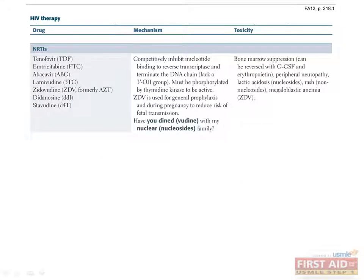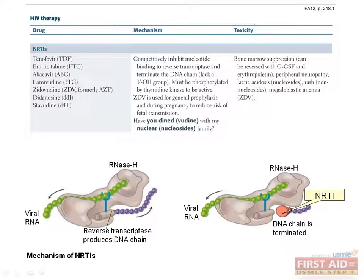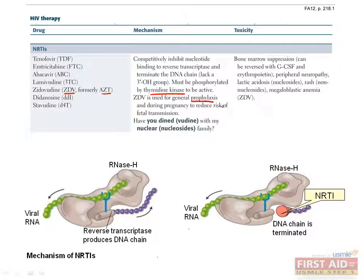The NRTIs are typically referred to by their respective acronyms. These drugs work through competitive inhibition of nucleotide binding to reverse transcriptase, thus terminating the DNA chain. Like several other antiviral agents, these drugs require the activity of viral enzymes — in this case thymidine kinase — for their activation. ZDV, formerly known as AZT, is one of the more widely used NRTIs and has particular utility as general prophylaxis, such as in needle stick exposures of healthcare workers, and in pregnancy to reduce the risk of fetal transmission.